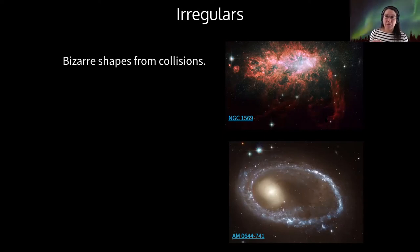For example, there are some dwarf galaxies that orbit the Milky Way called the Small Magellanic Cloud and the Large Magellanic Cloud. The Small Magellanic Cloud, the SMC, is being gravitationally torn apart by the Milky Way and leaves a streamer of stars behind it in its wake.